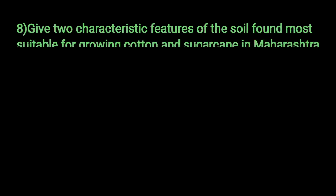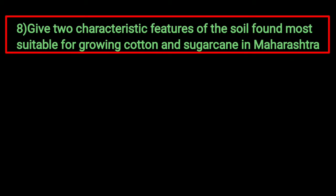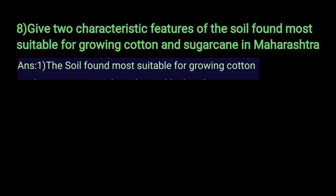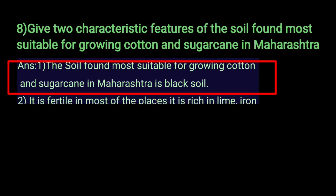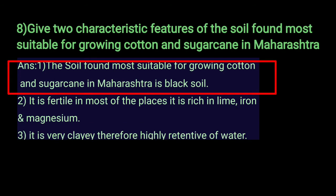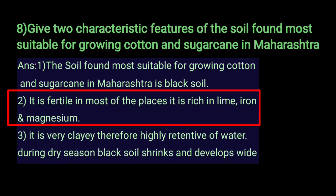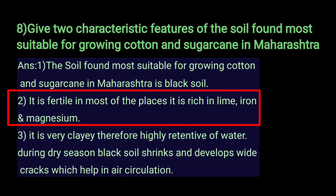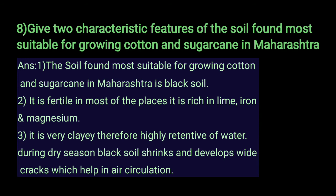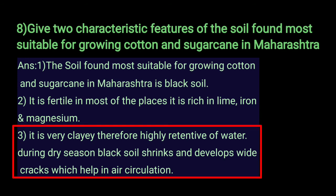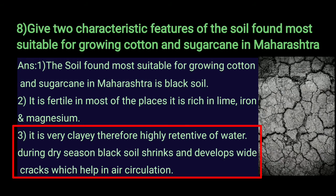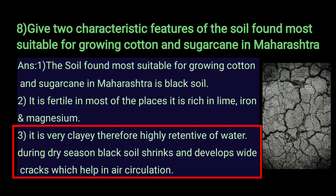Give two characteristic features of the soil most suitable for growing cotton and sugarcane in Maharashtra. The soil is black soil. It is fertile in most places and rich in lime, iron, and magnesium. It is very clayey, therefore highly retentive of water. During the dry season, black soil shrinks and develops white cracks which help in air circulation.